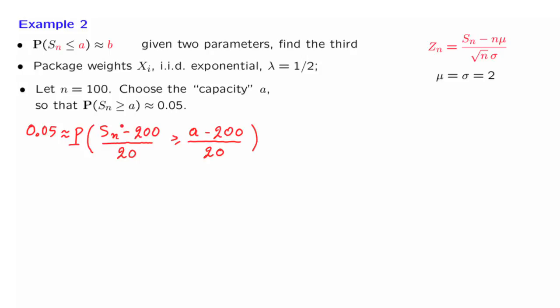And now, this random variable Zn is approximately a standard normal. So we're asking for the probability that the standard normal is larger than or equal to something, which, using the argument as in the previous example, is 1 minus the CDF of the standard normal evaluated at this particular value. Now, what this tells us is that this quantity here, the value of the CDF, should be equal to 1 minus 0.05. So this quantity here should be 0.95.